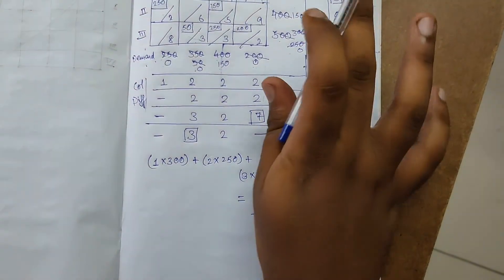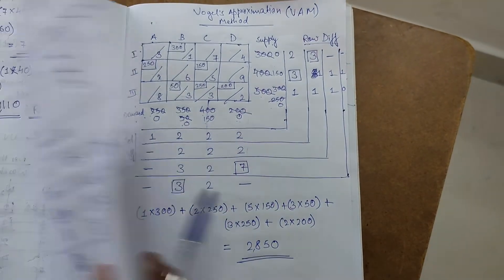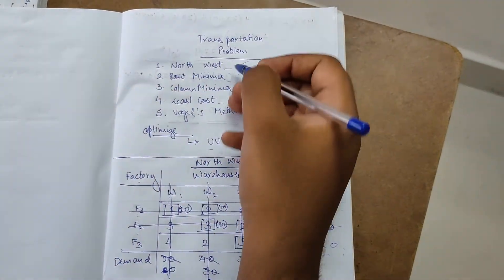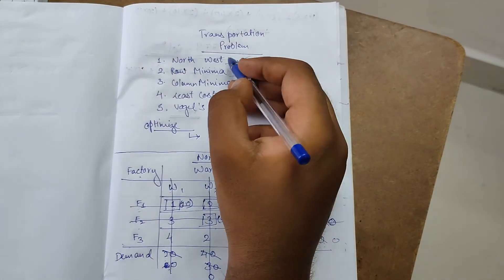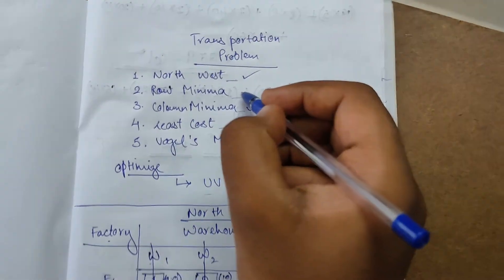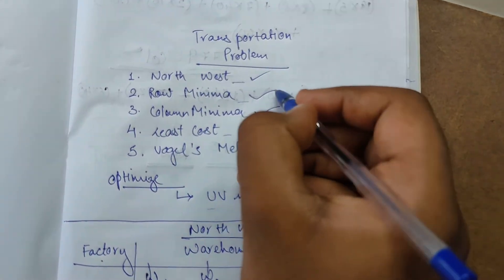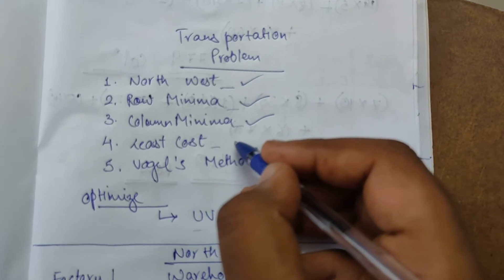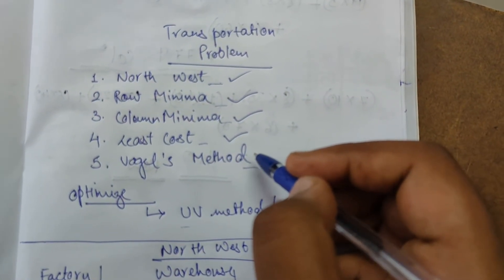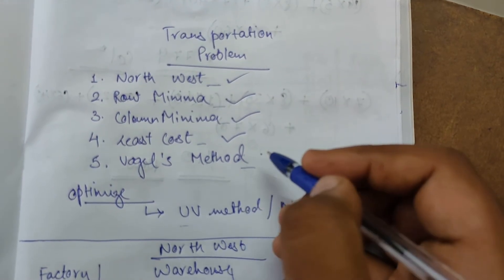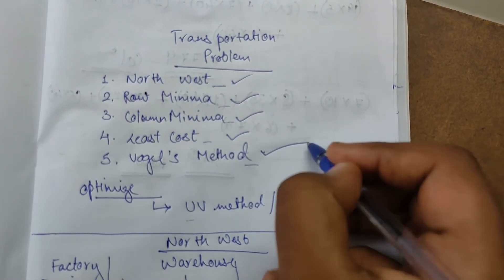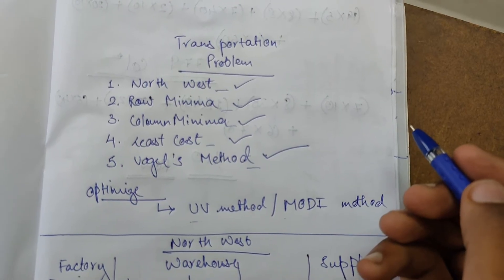So far we have covered all five methods for solving a transportation problem: first was the Northwest Corner method, second was Column Minima, third was Row Minima, fourth was Least Cost, and fifth was Vogel's Approximation Method. That's it, thank you.